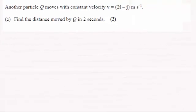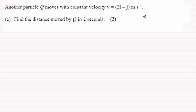Hi there. Now for this next part of the question we're told that another particle Q moves with a constant velocity V equals 2i minus j meters per second. And we've got to find the distance moved by Q in two seconds.